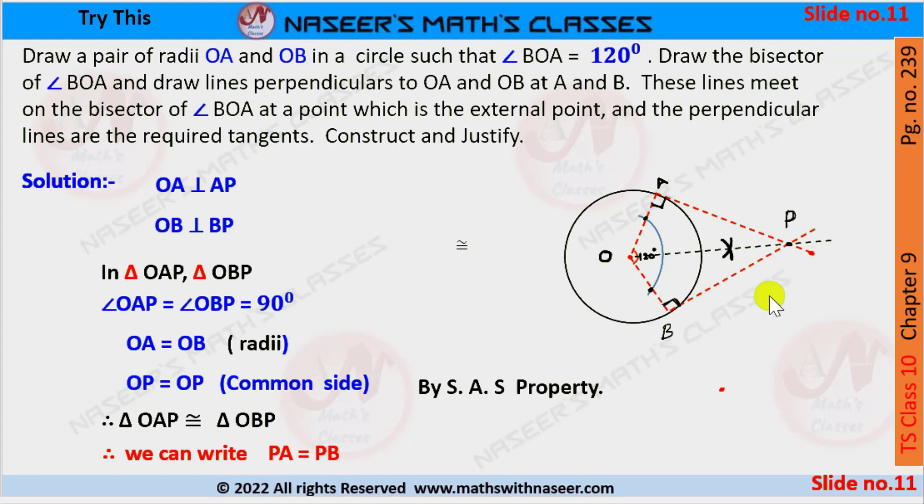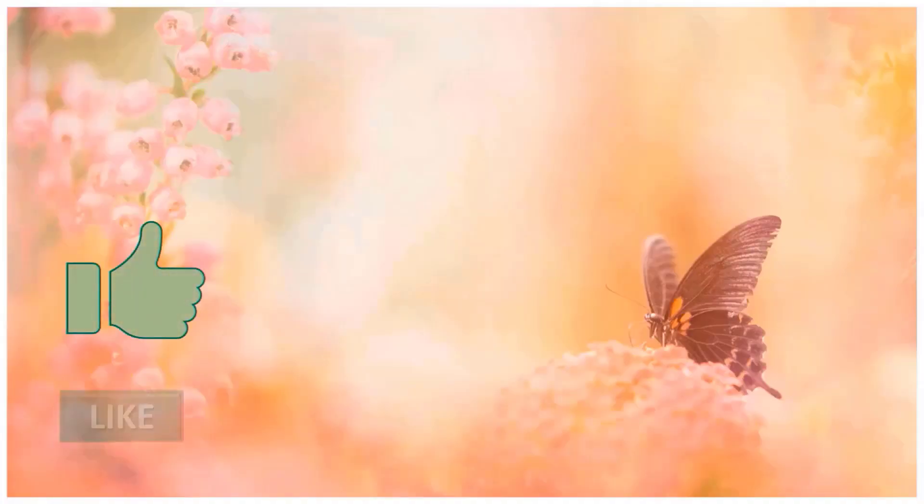By the Side-Angle-Side property, we can say that triangles OAP and OBP are congruent triangles. Therefore, we can conclude that tangent PA equals tangent PB. Please like, share, and subscribe to our channel.